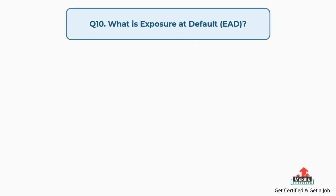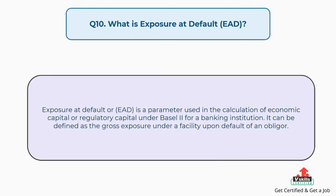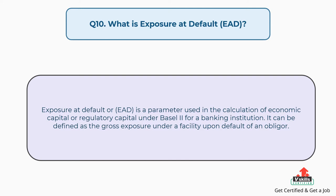Question number ten: what is exposure at default? Exposure at default is a parameter used in the calculation of economic capital or regulatory capital under Basel II for a banking institution. It can be defined as the gross exposure under a facility upon default of an obligor.